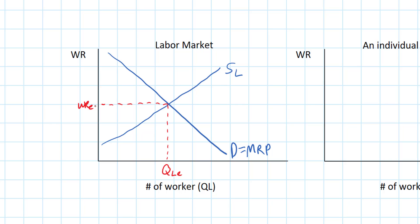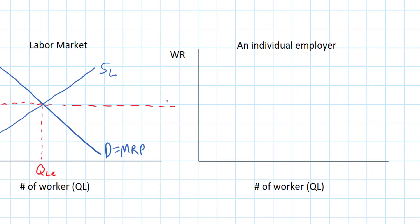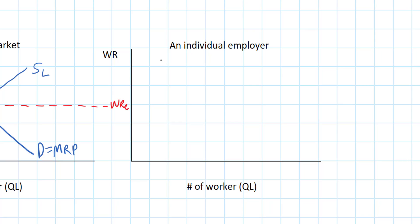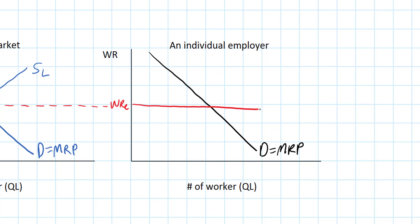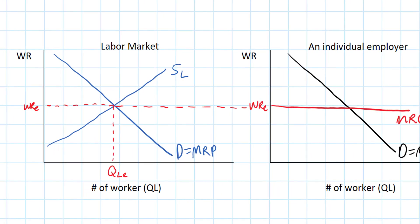An individual employer's demand for labor represents the revenues that additional workers earn the firm and is downward sloping — this represents marginal revenue product (MRP), the revenue earned by an additional worker hired. The profit-maximizing level of employment for an individual employer is determined by the intersection of the marginal resource cost (MRC), which in a competitive labor market is simply the wage rate the firm pays to hire additional workers. With many firms competing for workers, each firm is a wage taker.